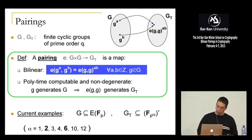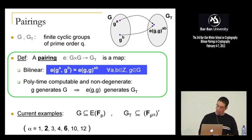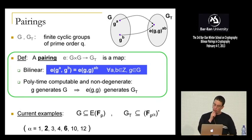The typical examples are when the source group is the group of points of an elliptic curve and the target group is a multiplicative subgroup of a finite field.